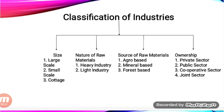The cotton textile industry contributes 7% of industrial output. Industrial output includes the production of all industries — textile, iron and steel, cement, and all others. So 7% of India's total industrial output is shared by the cotton and textile industry.